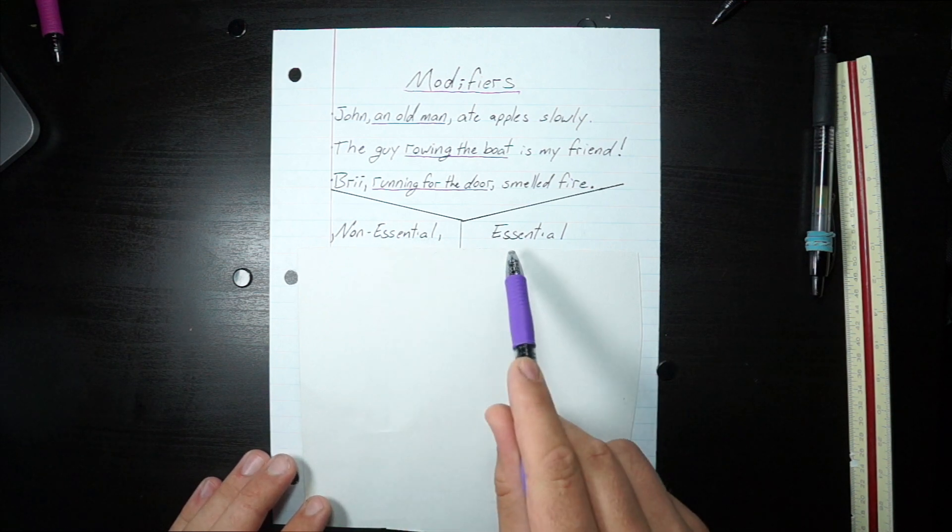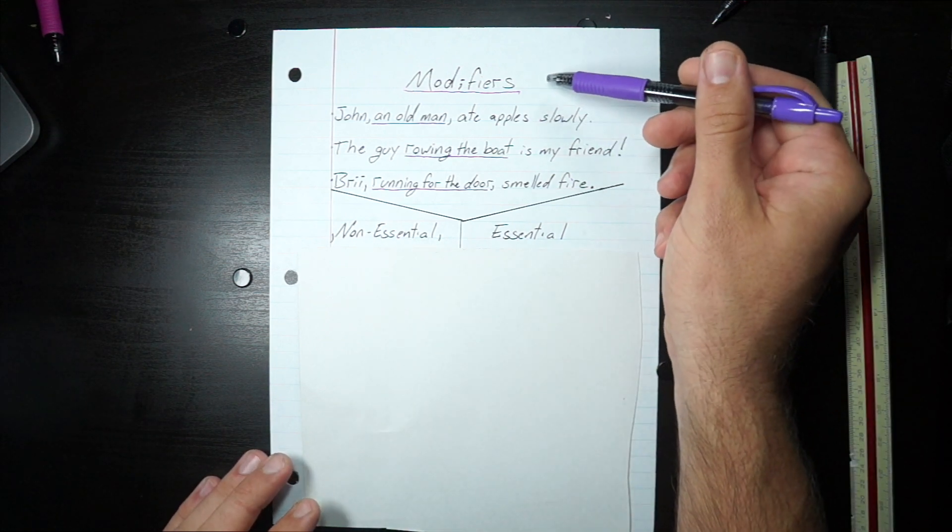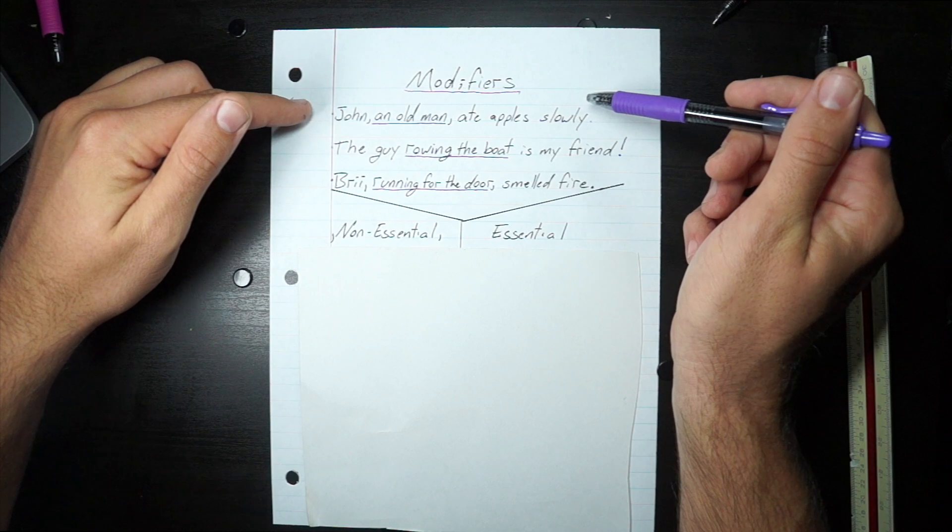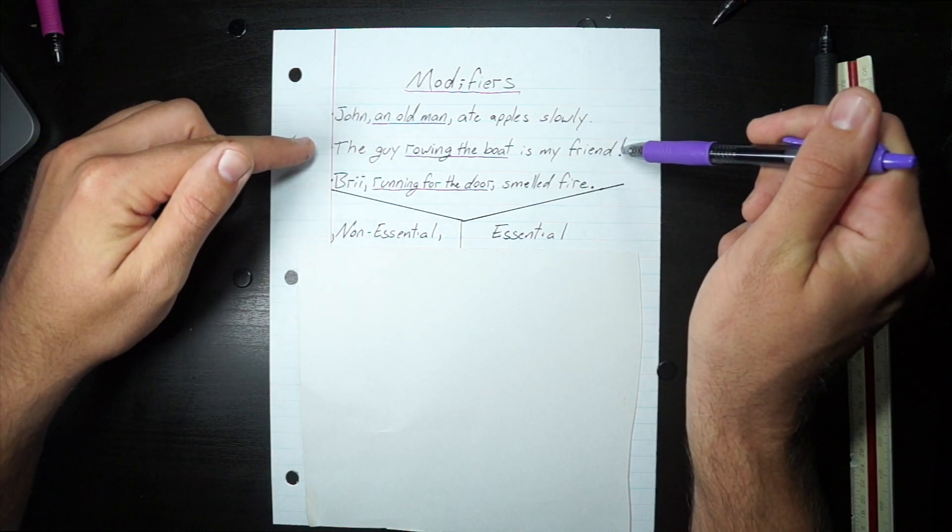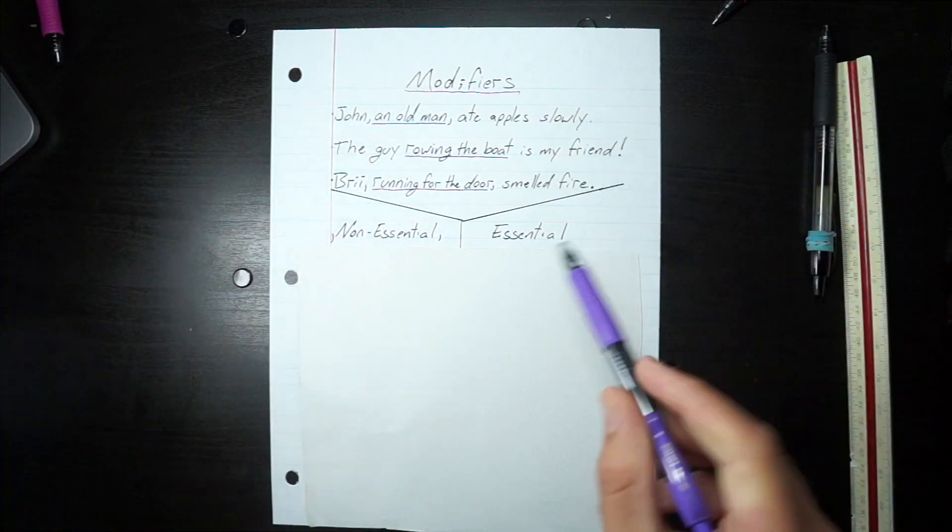Today we're talking about non-essential and essential modifiers. Now what is that? John, an old man, ate apples slowly. The guy rowing the boat is my friend. Bree, running for the door, smelled fire.